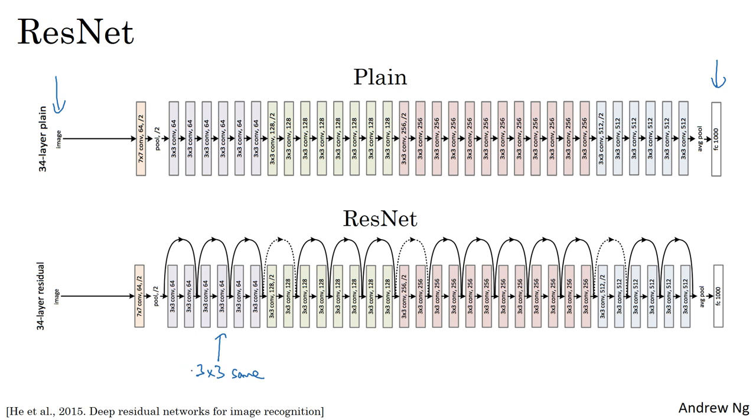And that's why you're adding equal dimension feature vectors. So rather than a fully connected layer, these are actually convolutional layers. But because they are same convolutions, the dimension is preserved. And so the ZL plus two plus AL addition makes sense.